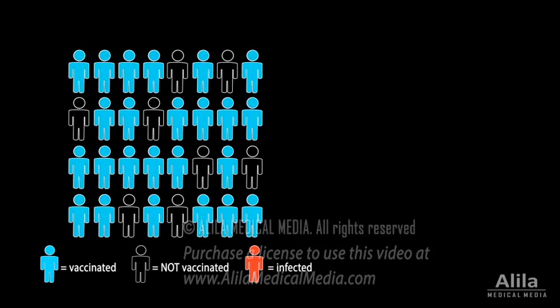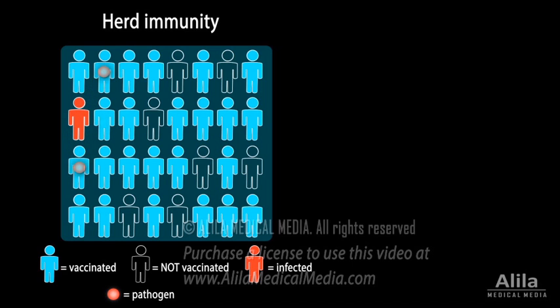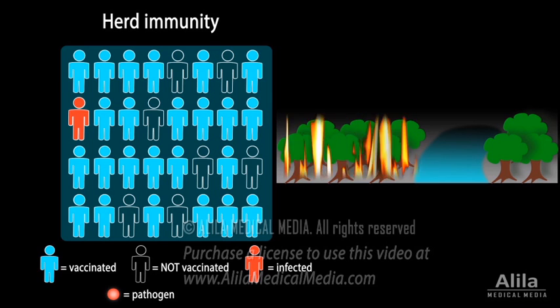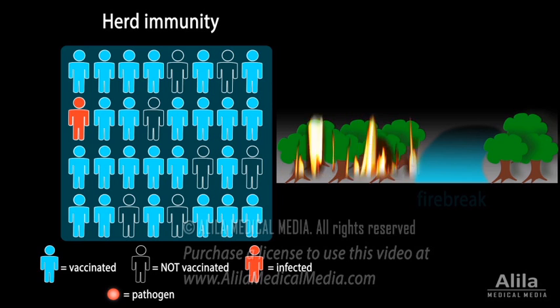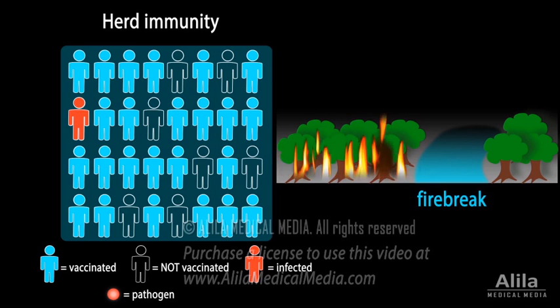When enough people in a community are vaccinated, the whole community — including individuals that were not vaccinated — is protected against the disease. This phenomenon is known as herd immunity. Herd immunity is possible because a pathogen cannot spread without a sufficient number of vulnerable hosts. An analogy is the spread of wildfires: a wildfire only spreads where there is vegetation, or fuel for it to burn. It would stop at a river or a large open space — these are called firebreaks. Vaccinated individuals essentially serve as firebreaks, preventing the spread of infections caused by pathogens.